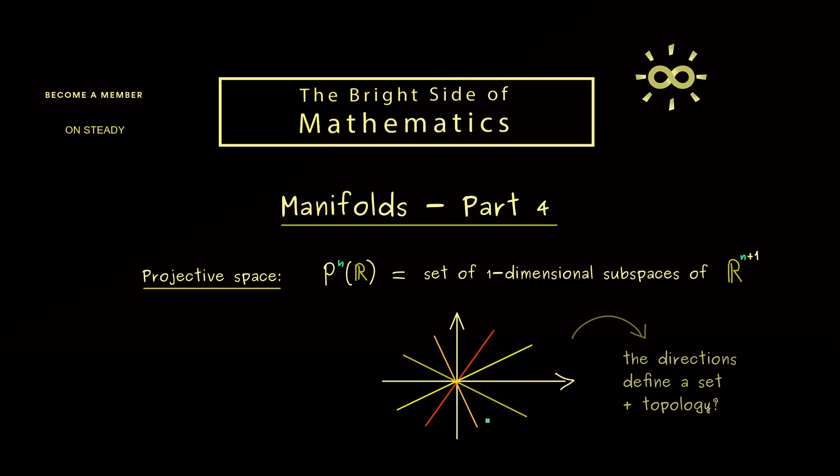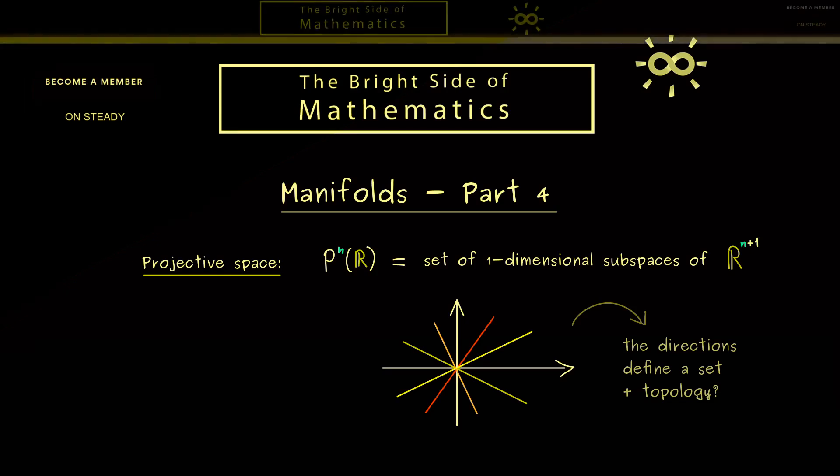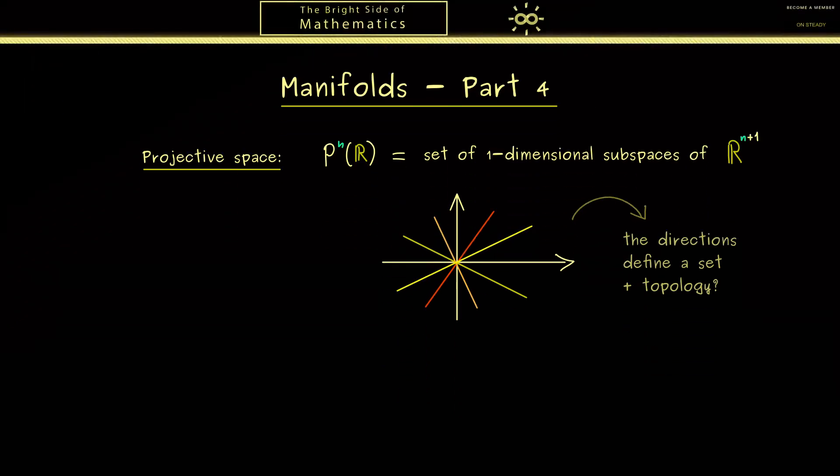However of course you know we also want a topology on this set. Now the question is which one should it be and how do we define it? Obviously this topology here should have something to do with the original topology on R^(n+1). So you see this is a general problem. How do topologies induce new topologies? Indeed this question leads us to the notion of a quotient topology.